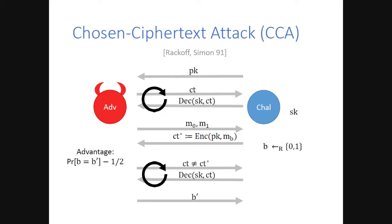We usually only consider one challenge ciphertext, and this is without loss of generality, because it implies many challenge ciphertexts via a hybrid argument. But for the purpose of this talk, I want to make explicit the fact that the adversary can actually get many challenge ciphertexts—it can send many pairs of M0 and M1 and get back the corresponding encryption of MB. I'm going to count the number of such challenge ciphertexts and decryption oracle queries. CCA is the de facto security notion for encryption.